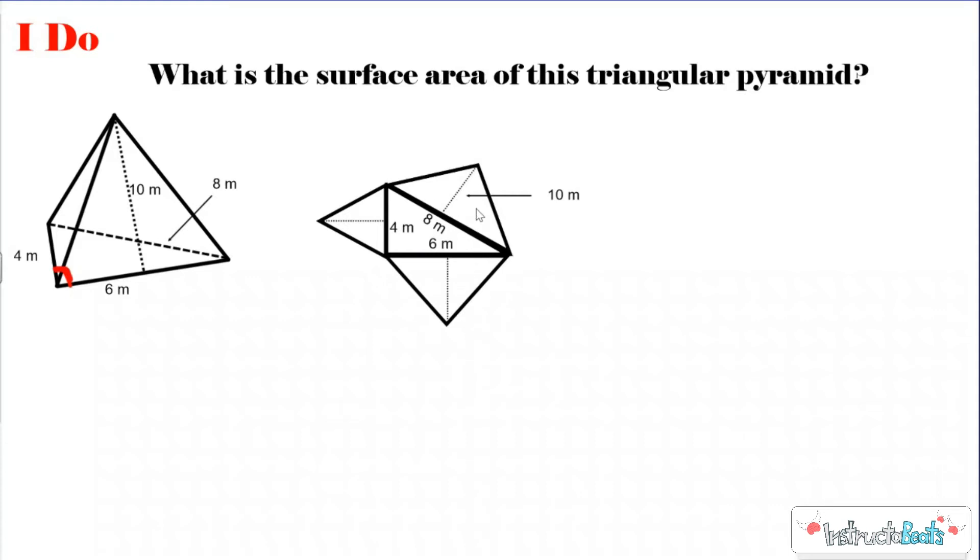When I look at this net, it's kind of confusing to me. But you can see we have our right triangle right here, and then we have our lateral face that had the 8 for the base, and it has a 10 for the slant height, which is now the height of this 2D triangle, which means all the other triangles are also going to have a height of 10. Now we can very clearly see all the faces that make up our triangular pyramid. We just need to find the area of each one.